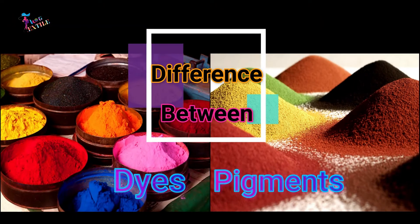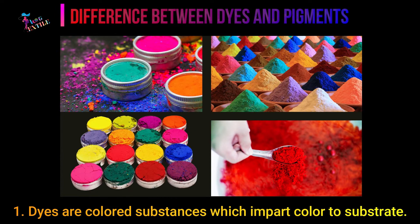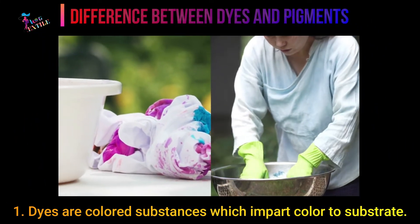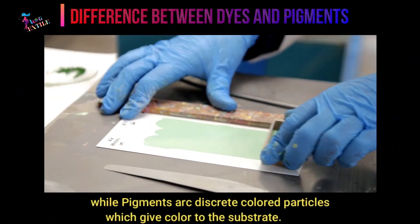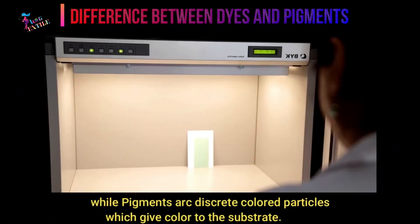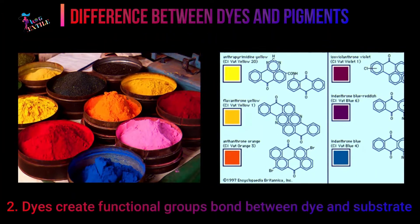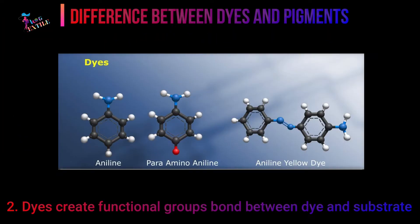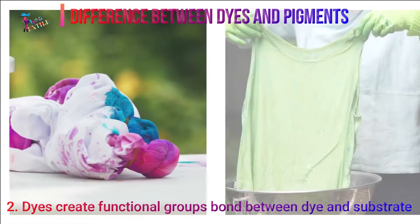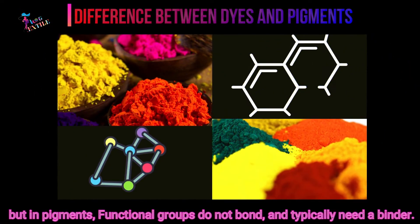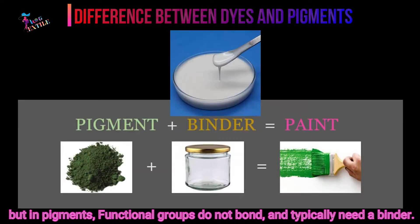Difference between dyes and pigments. 1. Dyes are colored substances which impart color to substrate, while pigments are discrete colored particles which give color to the substrate. 2. Dyes create functional group bonds between dyes and substrate, but in pigments, functional groups do not bond and typically need a binder.